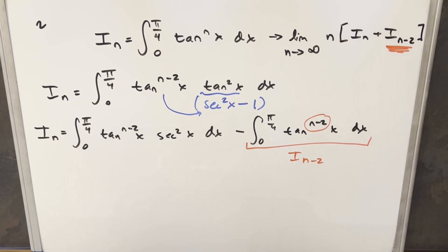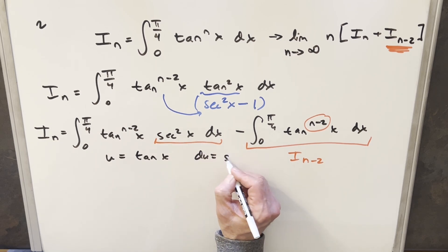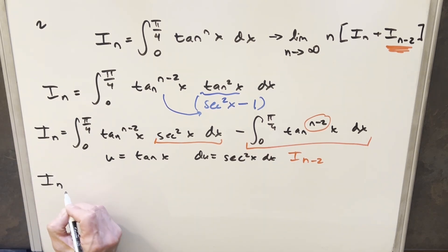But then coming over here, what we can do, because we have secant squared x dx and we have tangent, on this one we can do a u substitution. So I'm just going to say we'll set u equal to tan of x. And then for our du, du is going to be this stuff, which is just secant squared x dx. So we'll go ahead with this substitution. So here's our I sub n here.